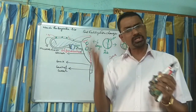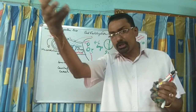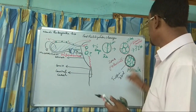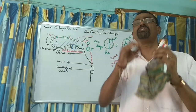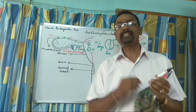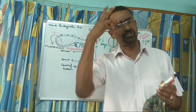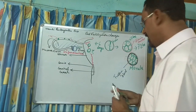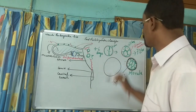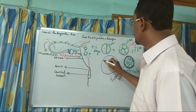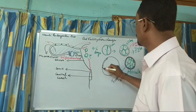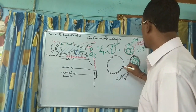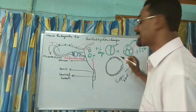Another development is happening: the Morula cells now become flattened and tend to take the form of a cyst. The Zona Pellucida remains around it and this is the trophoblast layer. This stage is called the Blastocyst. The Morula cells become flattened and form the embryo-knob inside.